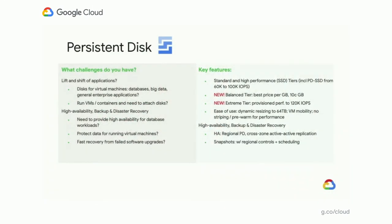Persistent Disk is our block storage product. You're looking to attach a disk to a VM and run a whole range of traditional applications — classic three-tier applications, high-end database applications, or even big data applications — for performance. With persistent disk, today we have two tiers: a standard tier and a high-performance SSD tier. Over the last year, we've steadily improved the performance of those — for persistent disk SSD, we've improved IOPS from 60K to 100,000 IOPS, all as part of the product that was available.